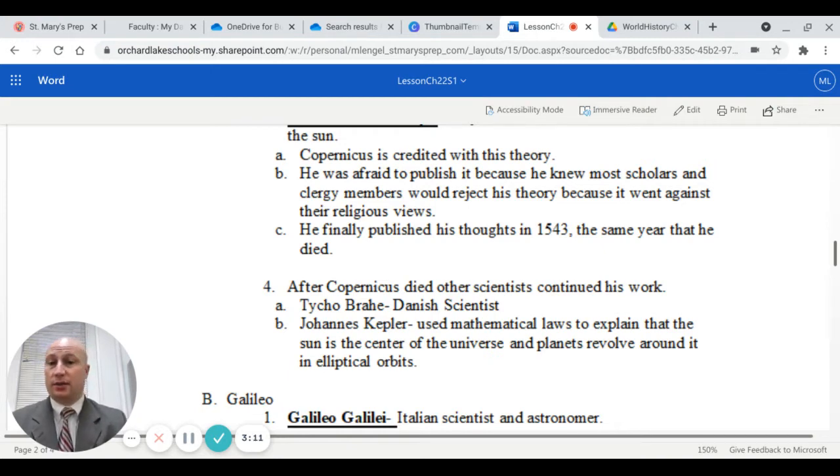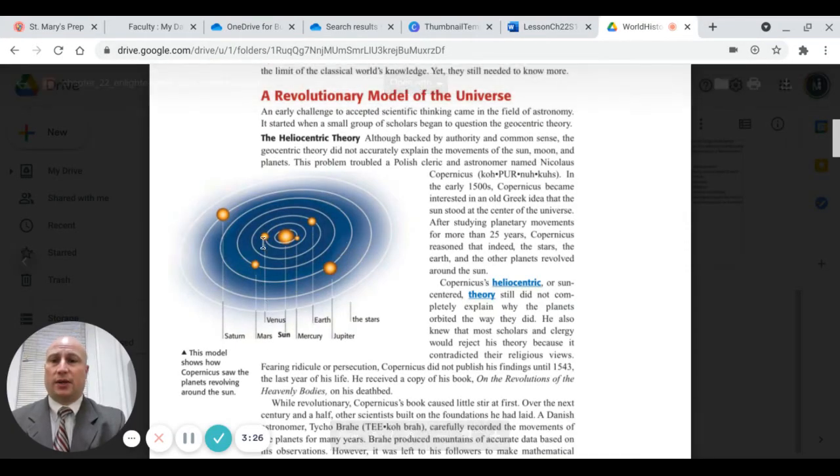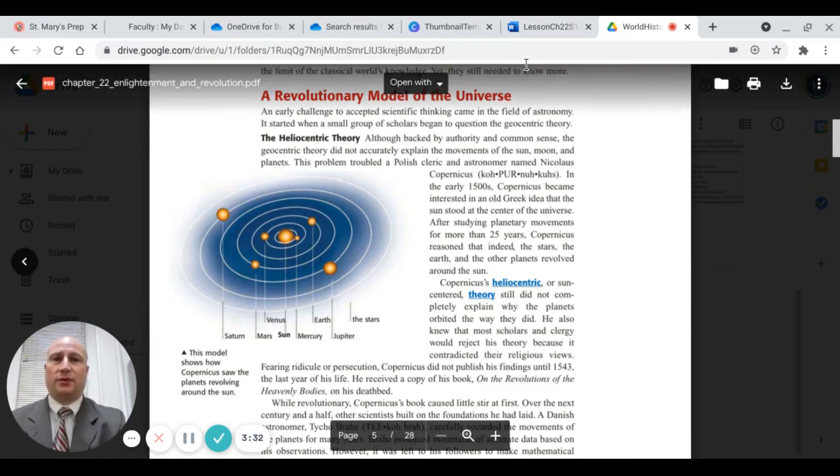After Copernicus died, other scientists continued his work, like Tycho Brahe, a Danish scientist, and Johannes Kepler, who used mathematical laws to explain that the sun is the center of the universe and the planets revolve around it in elliptical orbits. This is sort of how Copernicus viewed the heliocentric theory.